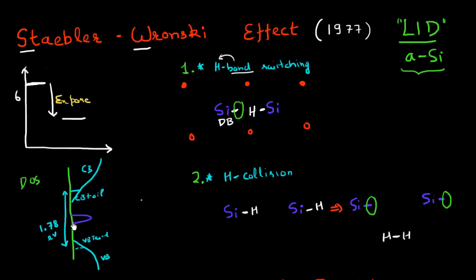These dangling bond states lie right in the middle between the conduction band and valence band states. That makes them an excellent recombination center. The result of this light-induced degradation is that you create a large density — you increase the density — of these dangling bond states, which results in a lot of increased recombination in your cell. The electrons and holes that are produced instead of getting collected can easily recombine using these dangling bond states as a recombination center.